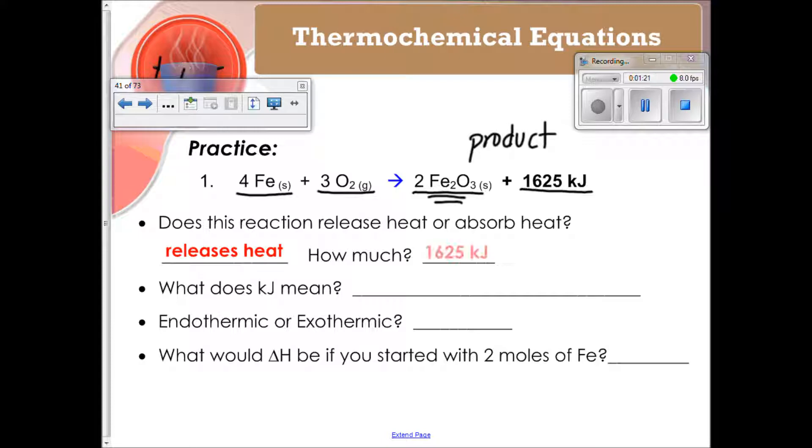How much? It's going to be the value that's given to you, 1625. This value is dependent, however, on the moles that are here. So for every 4 moles of iron, you get the 1625. For every 3 moles of the O2, that's what you get. What does the kilojoules mean? It means kilojoules, and it is a measurement of heat.